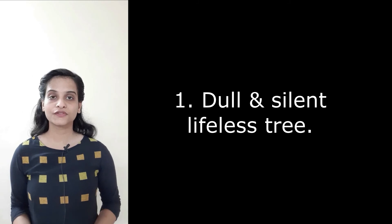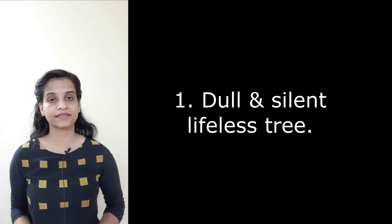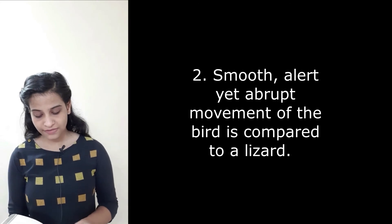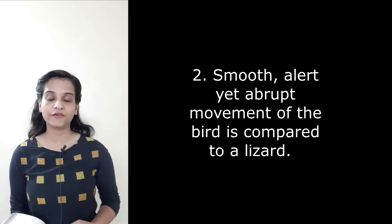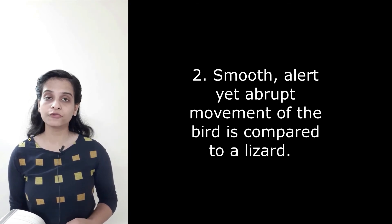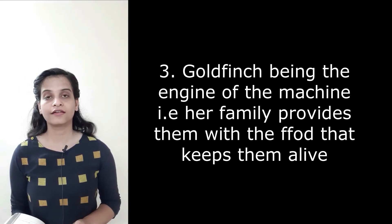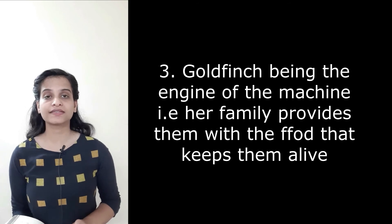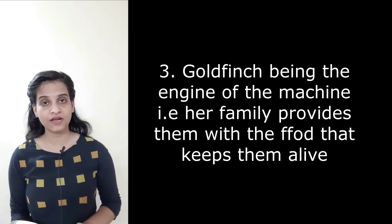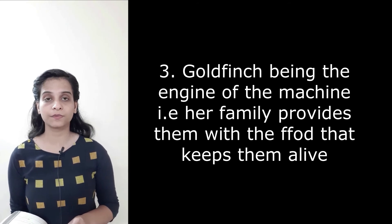At the beginning and end of the poem, one thing that remained the same was the dull, silent, lifeless life of the tree. Second question: What is the bird's movement compared to, and what is the basis for the comparison? In the third line of the second stanza, the movement of the goldfinch is compared to the smooth yet abrupt and alert movement of a lizard. Third question: Why is the image of the engine evoked by the poet? The engine is the source which runs the machine; without it the machine cannot work. Here the goldfinch is the engine which feeds her family and provides energy and life to her chicks, who wouldn't have lasted longer without her.